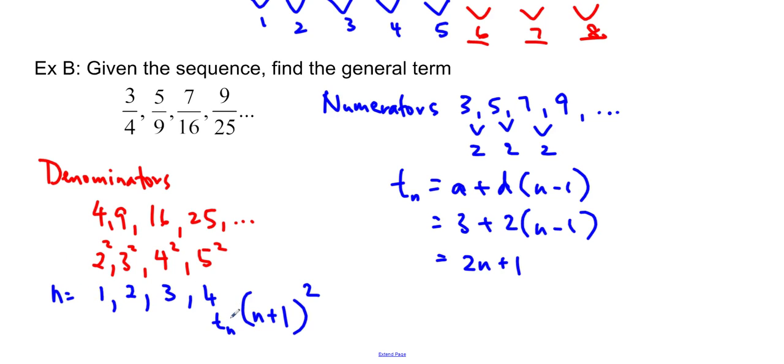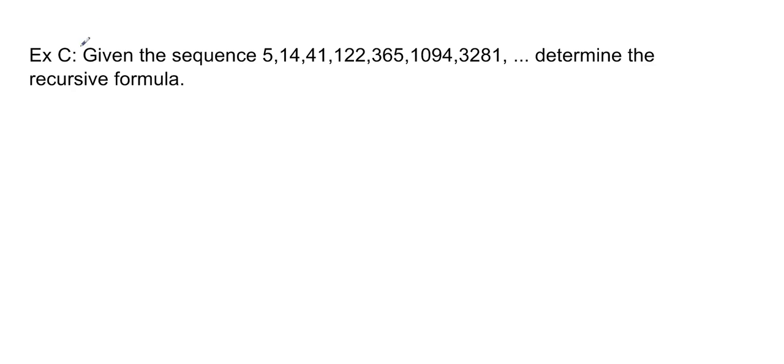So now we can see how n is related to these numbers here. I can see that this is actually n plus 1 squared. So now I have my general formula for the denominators as well. So the general term for the whole sequence is 2n plus 1 over n plus 1 squared. And that's how you do it.